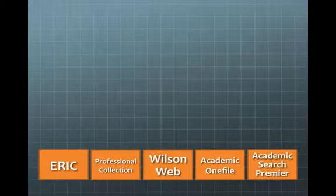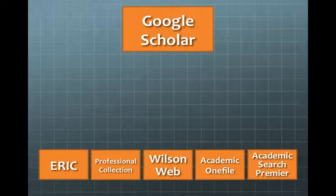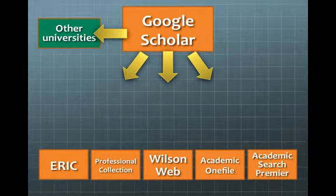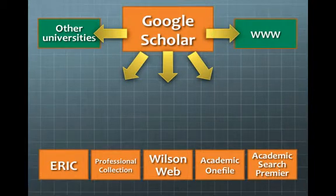What we're going to talk about today is a different tool that's separate from Unions databases but does interact with the databases, and that is Google Scholar. Google Scholar is a product of Google, and I'll show you how to hit the exact Scholar website or search engine, and then how to make it talk back and forth with Unions databases. Google Scholar is actually going to search all of those databases at the same time with one search, and it will also search other universities that might make certain articles available, as well as searching the entire web for academic scholarly journals.